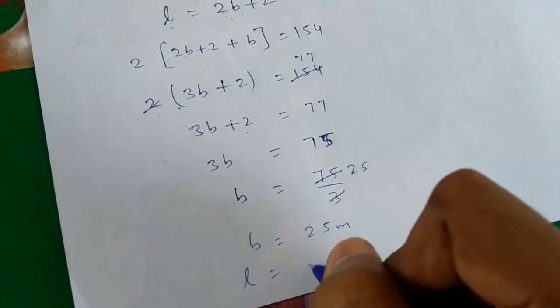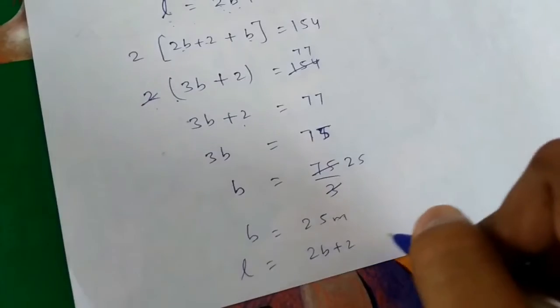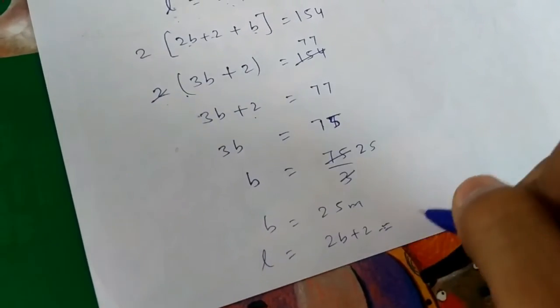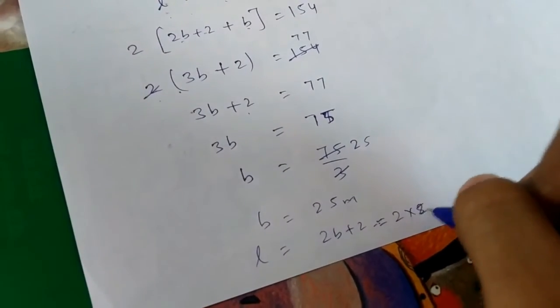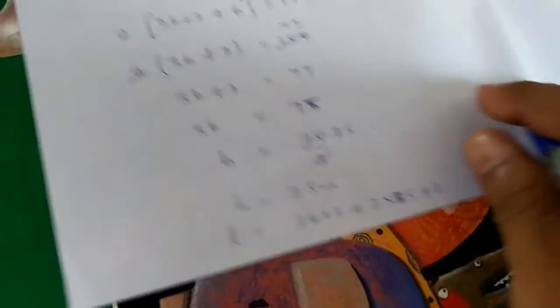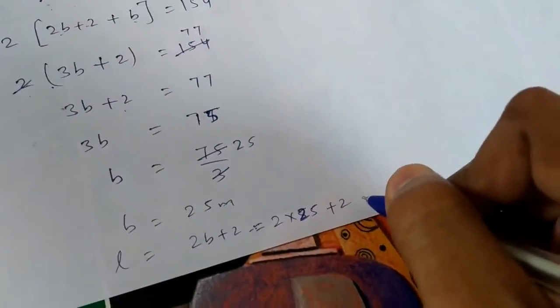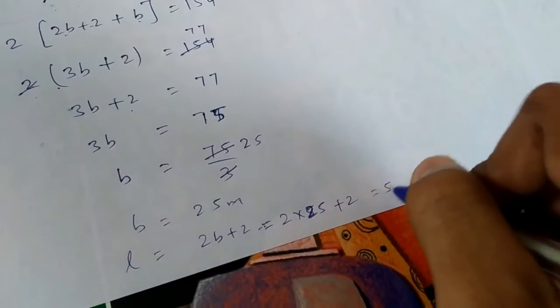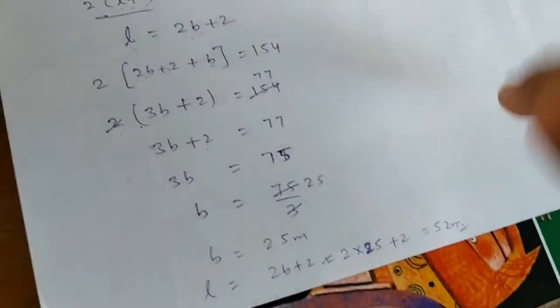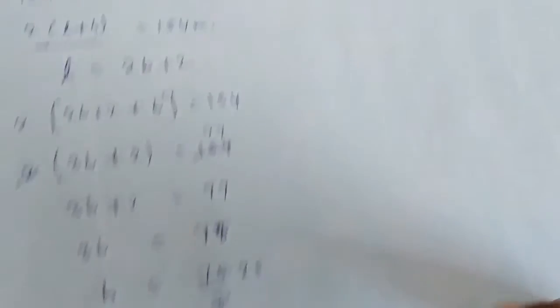Now for L, we know L is 2b plus 2, which is 2 into 25 plus 2. That equals 50 plus 2, which is 52 meters.